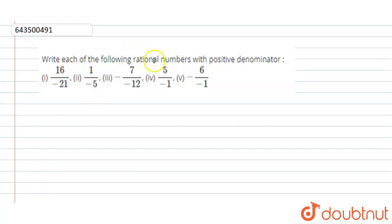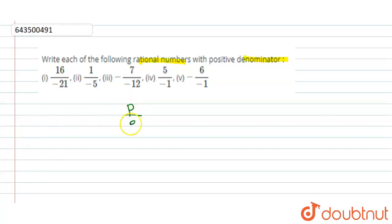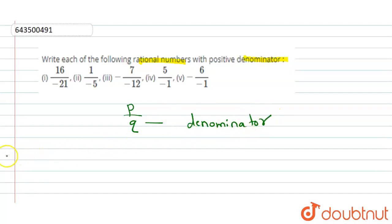Hello everyone. Our question is: write each of the following rational numbers with a positive denominator. The first thing we need to know is what our denominator is, so that we are able to represent it in a positive way. A number is given in the p upon q format, and here q is called the denominator — what is given at the bottom is called the denominator.